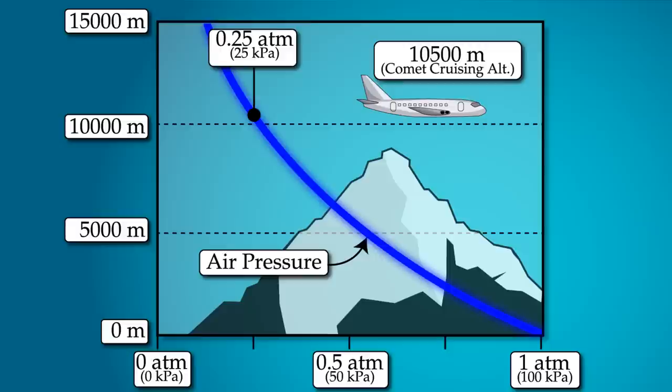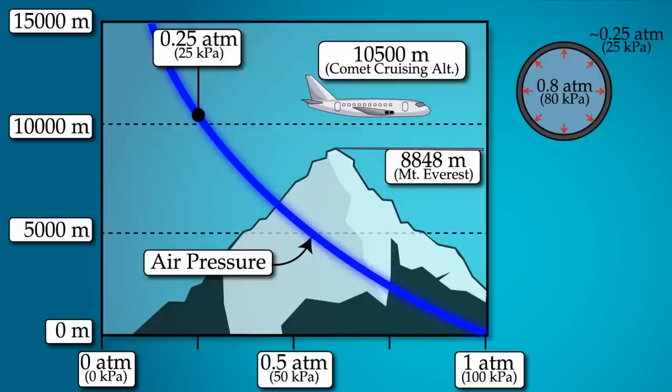For passenger comfort, the cabin is pressurized to about 80% of the sea level pressure. This means that at cruising altitude, there is about half an atmosphere of pressure difference. This causes the cabin to expand, which results in material elongation and hoop stresses in the fuselage. During the descent, the outside and inside pressures would equalize and the fuselage would contract back to its original size.